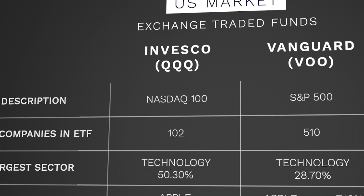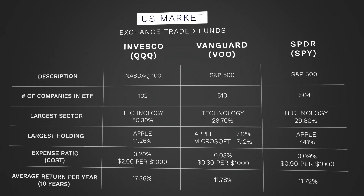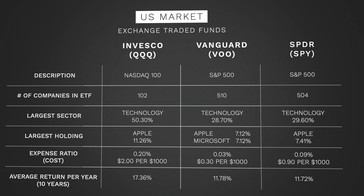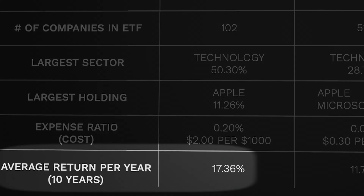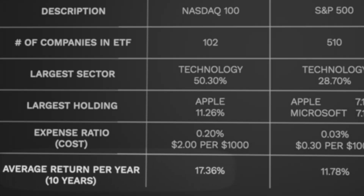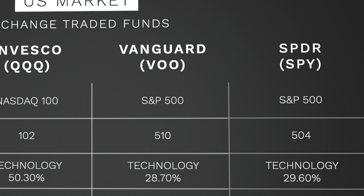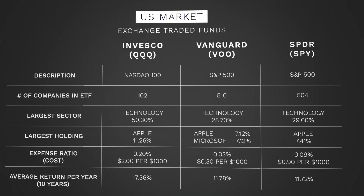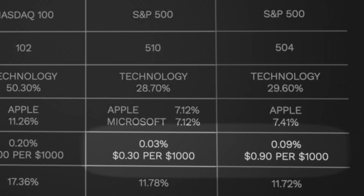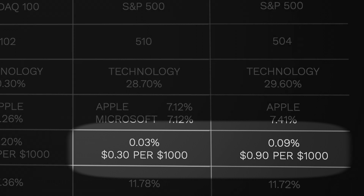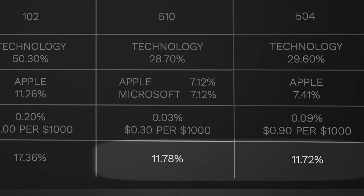Invesco's QQQ tracks the NASDAQ 100 Index, which is very heavy in the technology sector with Apple being the largest holding. QQQ as of today has averaged 17.36% per year in returns over the past 10 years. Vanguard's VOO and Spyder's SPY both follow the S&P 500 Index, so they'll be very similar in composition. The biggest difference between these two is the expense ratio, or the cost, with Vanguard's VOO being $0.30 per $1,000 and Spyder's SPY being $0.90 per $1,000. Each of these have done really well with an average return of just a little bit short of 12% per year.